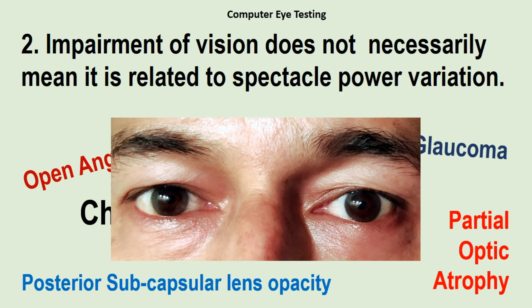In all these conditions, the eyes may look absolutely normal from outside. These diseases can only be diagnosed by a clinician or ophthalmologist, who will diagnose these ailments after seeing the fundus — the image of the back part of the eye — with the help of an ophthalmoscope, and by getting some investigations done. An auto refractometer cannot diagnose any of these dreadful eye conditions.